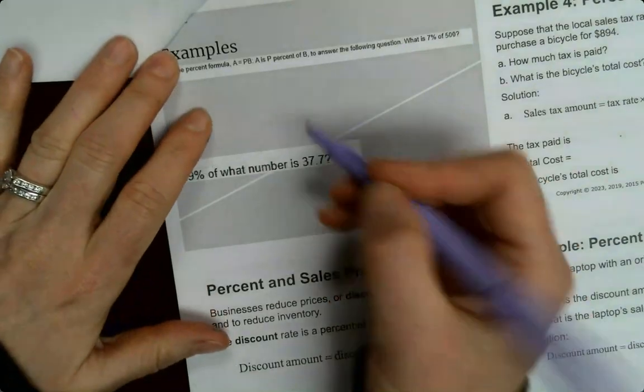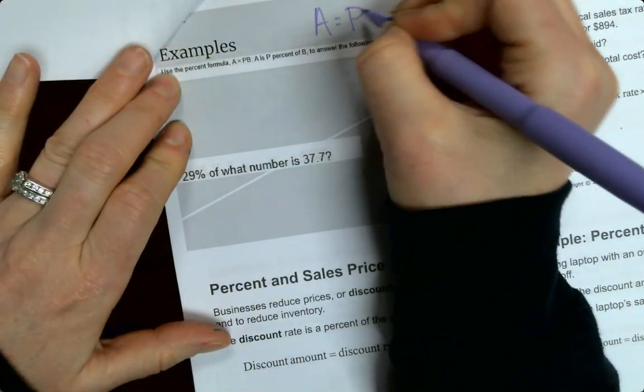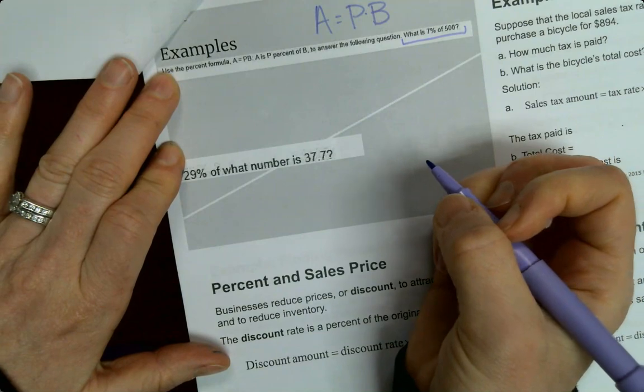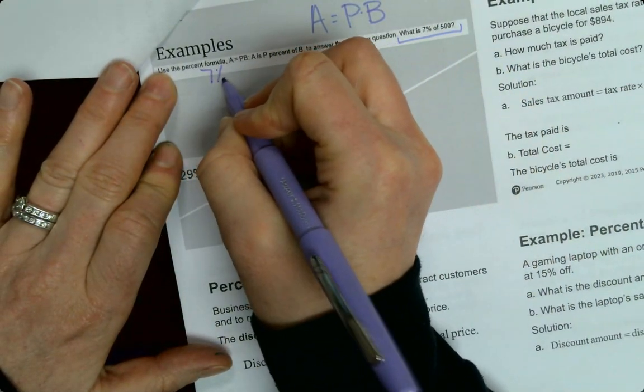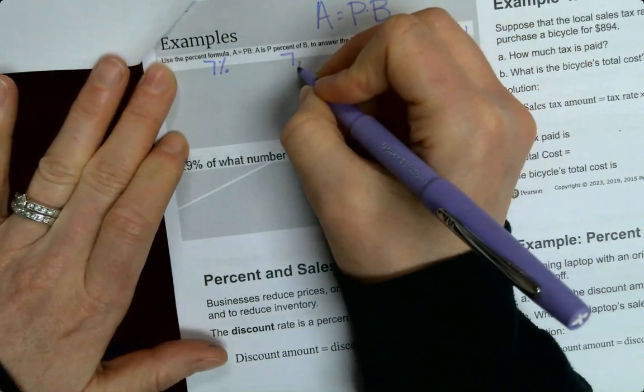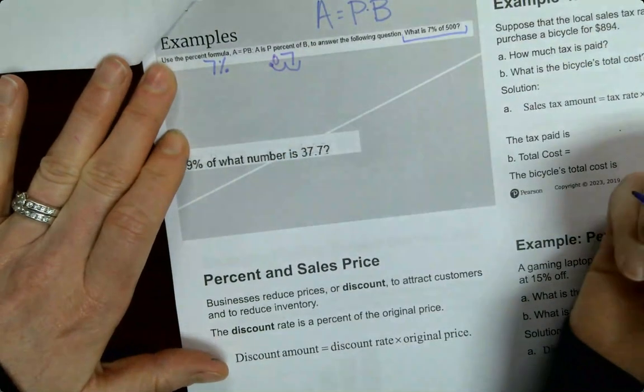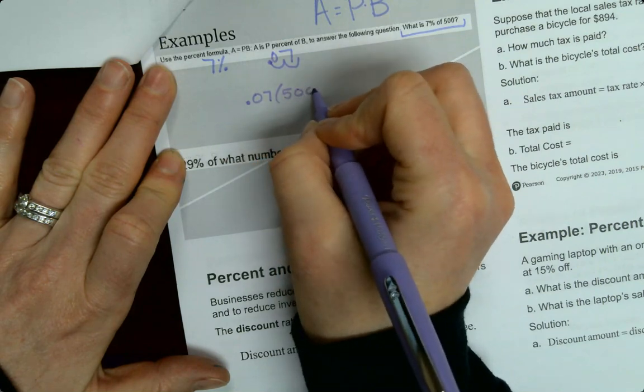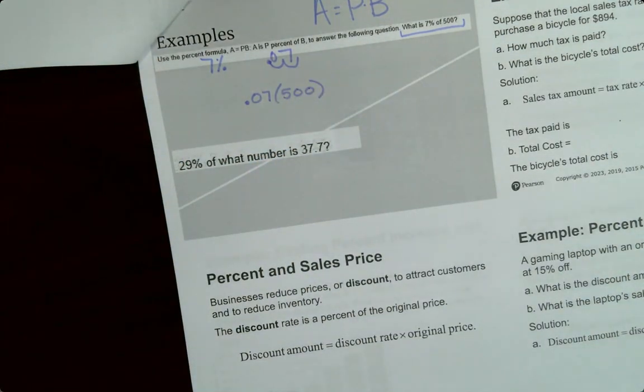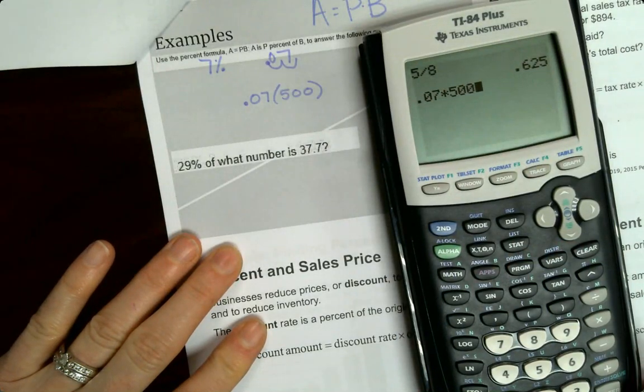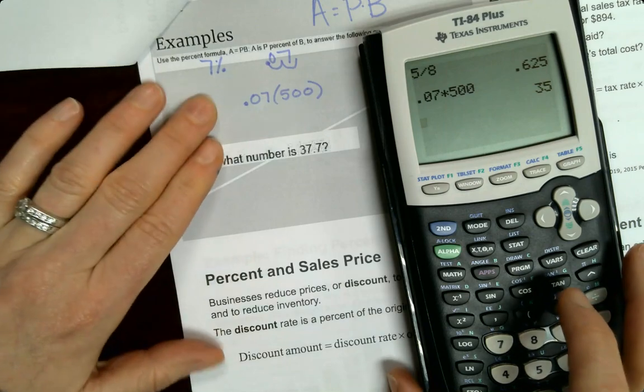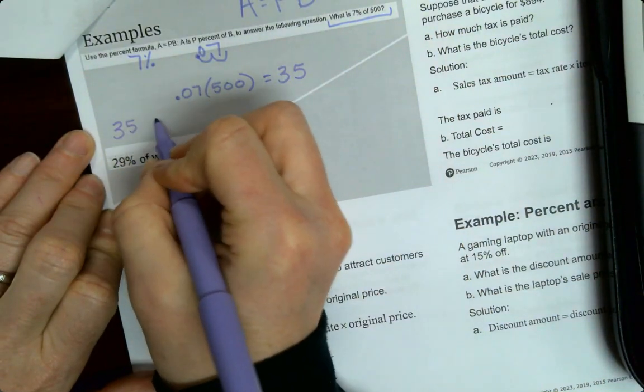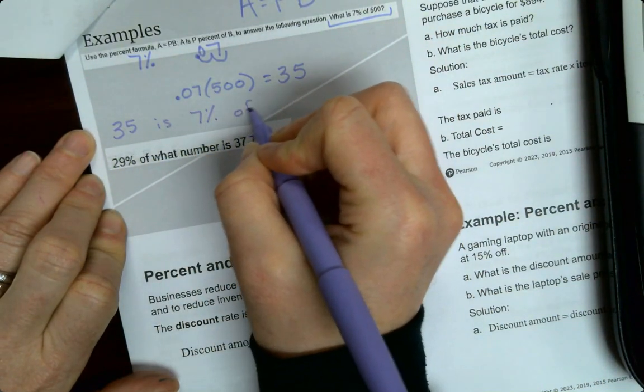So we will convert this percent to a decimal. Let's look at the example. It says use A equals P times B. It says what is 7% of 500. So the first thing we want to do is we want to convert this 7% to a decimal. So I'm going to rewrite 7 and move my decimal over 1, 2, 0.07. And that's what I'm going to multiply times 500. So 0.07 times 500, 35. So the way you could write this is 35 is 7% of 500.